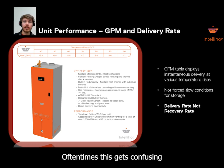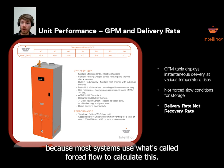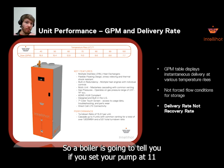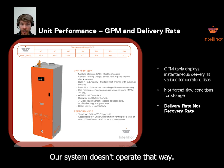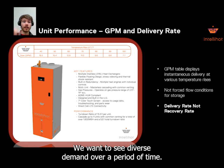Oftentimes this gets confusing because most systems use what's called forced flow to calculate this. A boiler is going to tell you: if you set your pump at 11 GPM, this is what you're going to deliver. Our system doesn't operate that way — we don't want it to operate that way. We want to see diverse demand over a period of time.